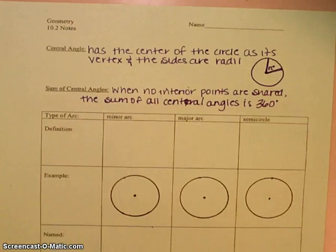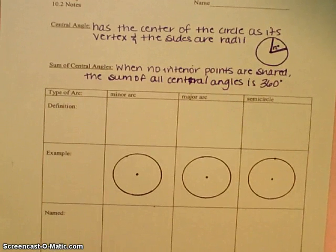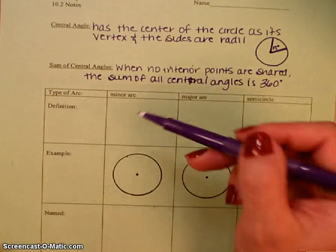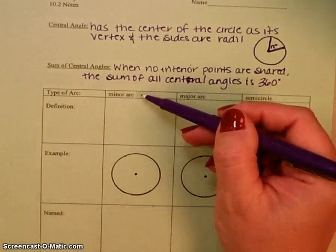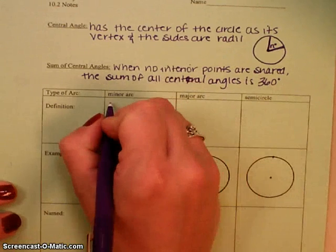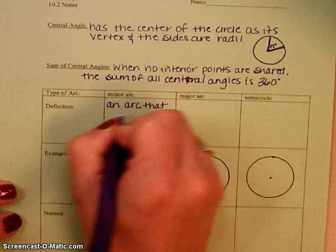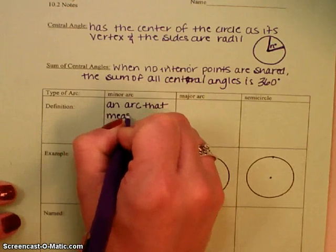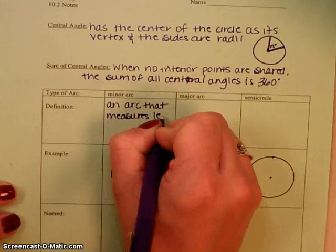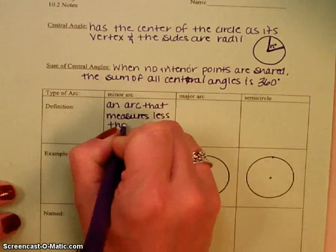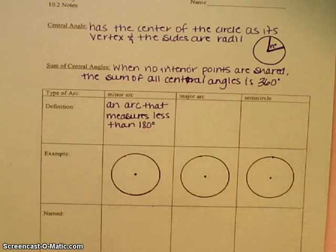So we are going to now take a look at some arcs. There are a couple of different arcs, three different arcs that we can identify. The first of these is a minor arc. So the definition of a minor arc is an arc that measures less than 180 degrees. Well, we know about angle measure, but we haven't really talked about arc measure. So here's an example.